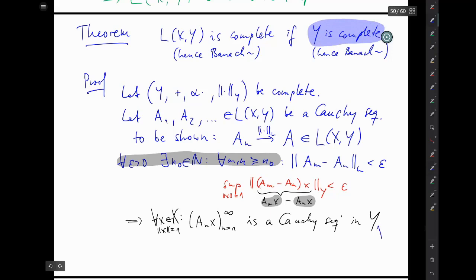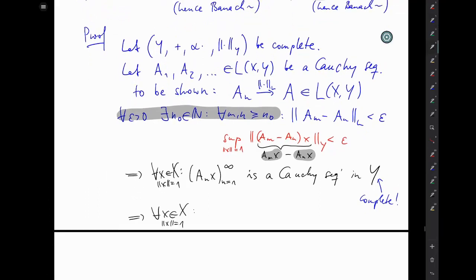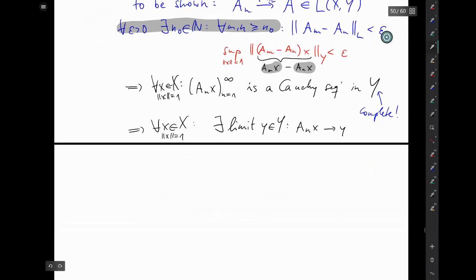We say that Y is complete, so let's use that fact. Y is complete, so we have limits in Y. For every such X in X that has norm equal to 1, there exists a limit, let's call it little y in Y, such that A_N(X) converges to y in the sense of convergence in Y. Let's write this as y equals limit as N goes to infinity of A_N(X).